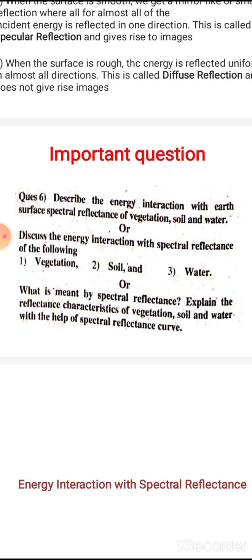Spectral reflectance was already explained in the previous class. In remote sensing, we utilize the electromagnetic energy that gets reflected from objects in the area being surveyed. From this reflected energy, data is produced with the help of a sensor mounted in a satellite, and the remote sensing data will be in the form of an image.